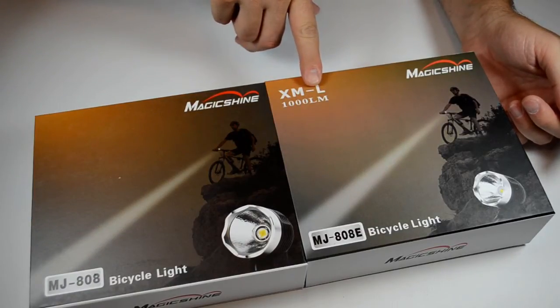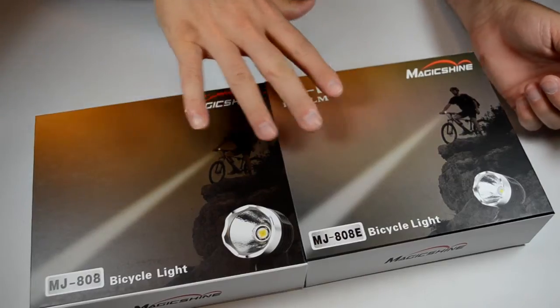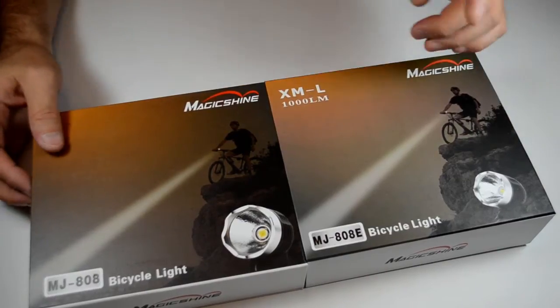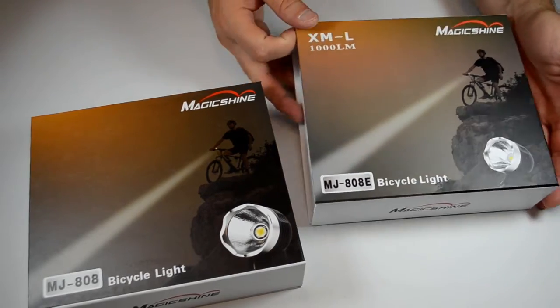There's a little bit of difference in output too. I think one's got 900 lumens and the other one's got a thousand. So let's go ahead. I'm going to open up the newer one, the 808E.